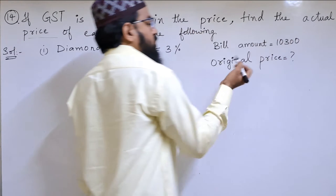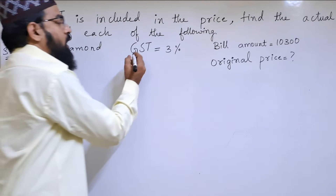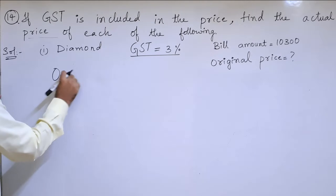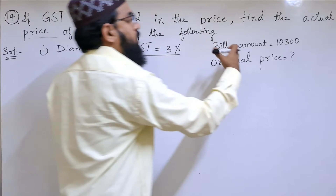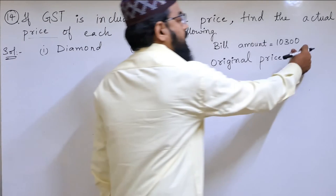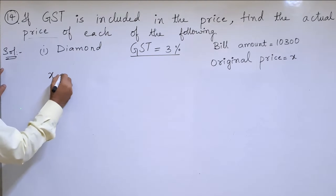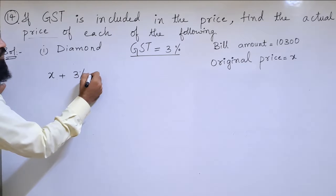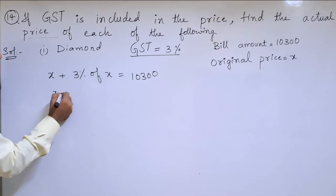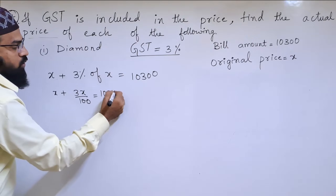We need to find the original price. After applying the GST, the bill amount is ₹10,300. We will take the original price as x. For this price, tax has been imposed, so we write: x plus 3% of x, which is 3x by 100, is equal to 10,300.